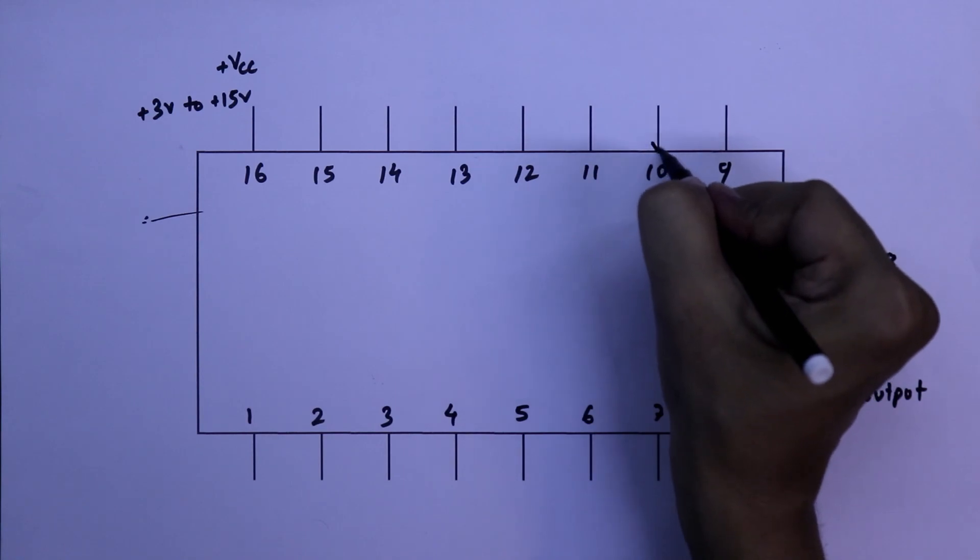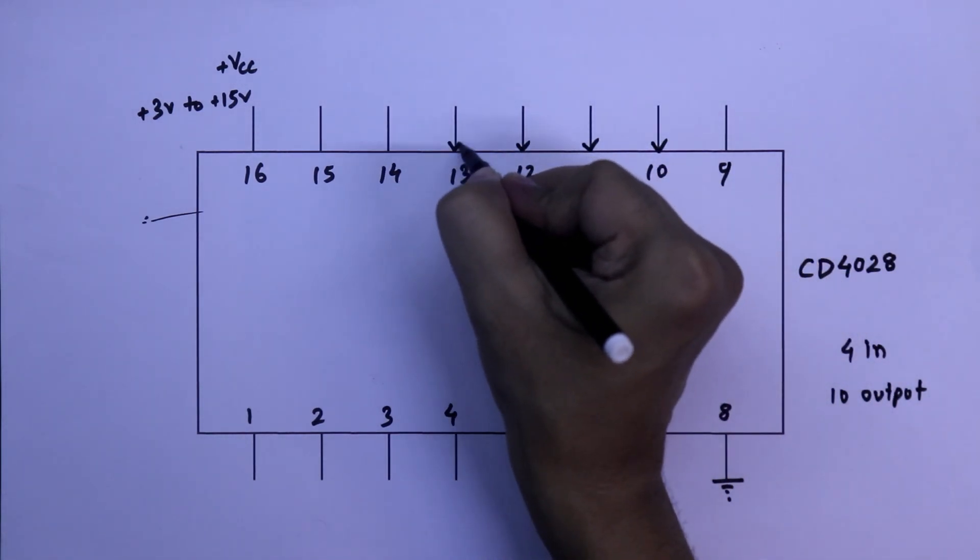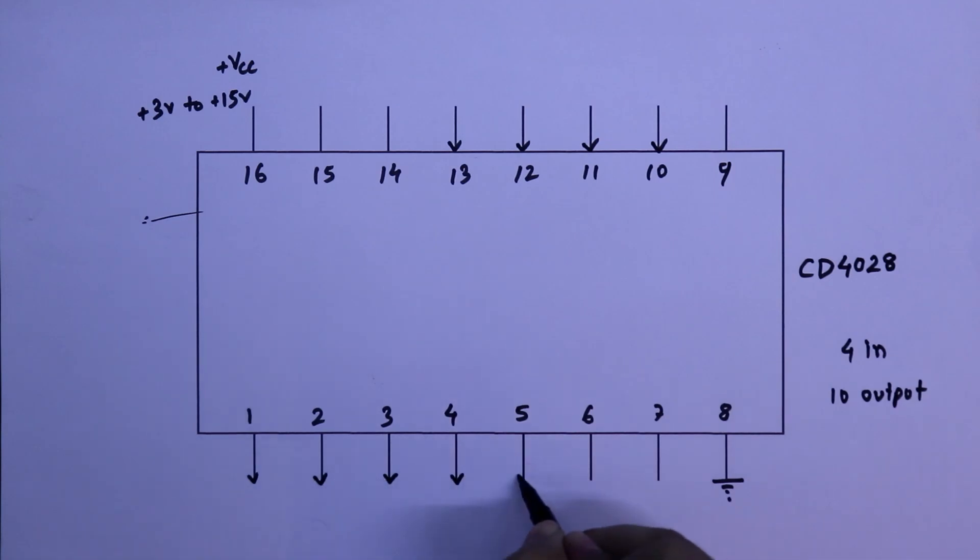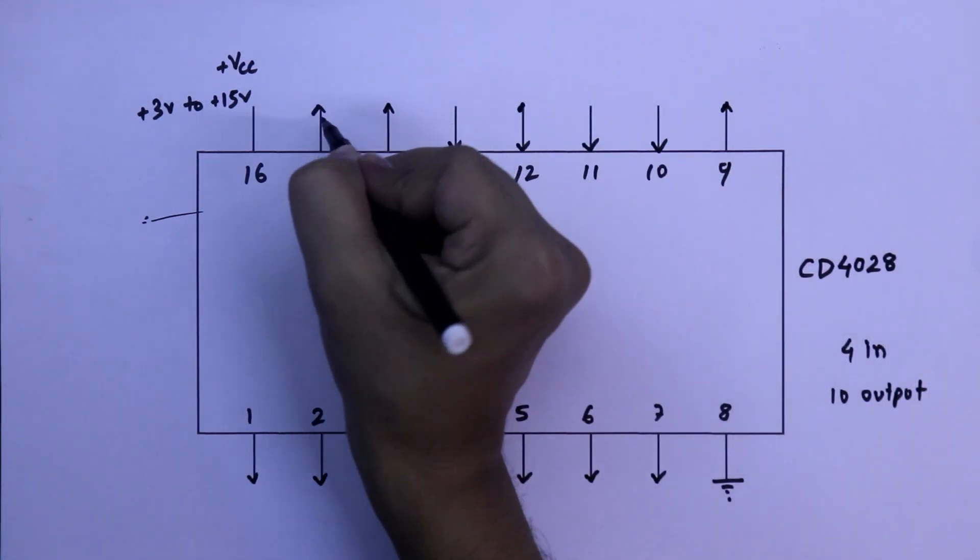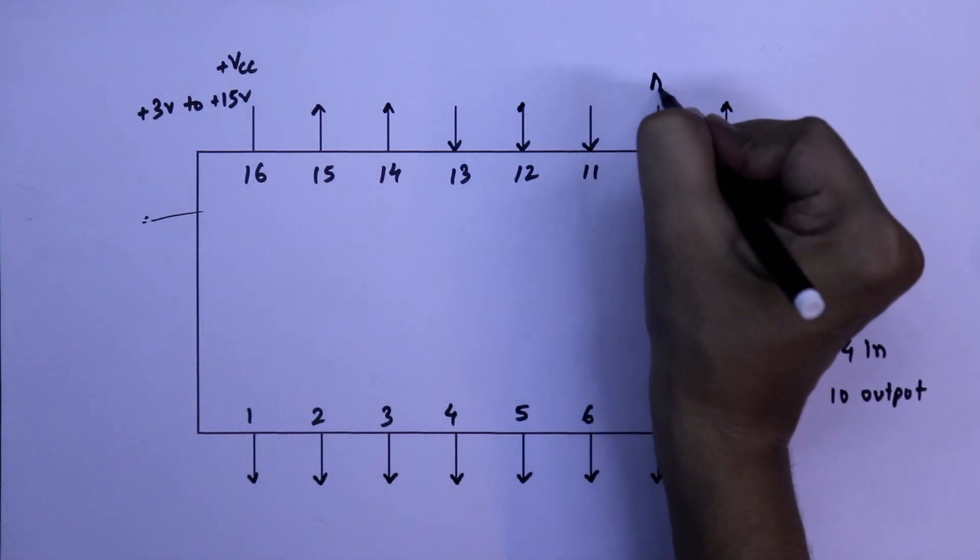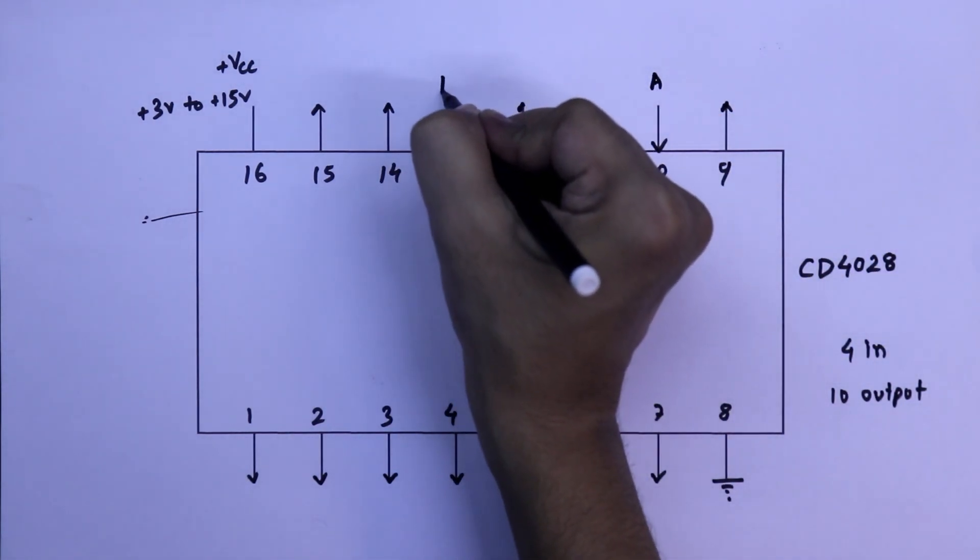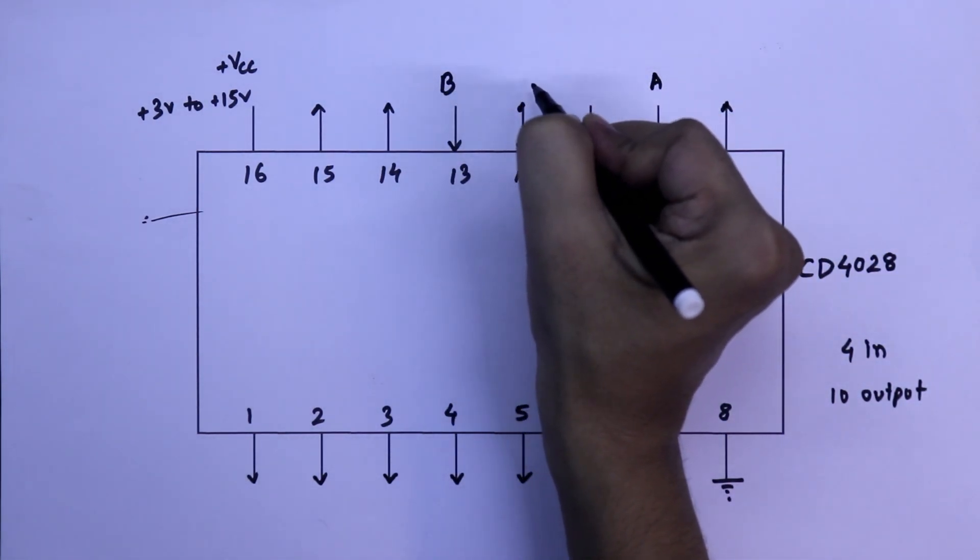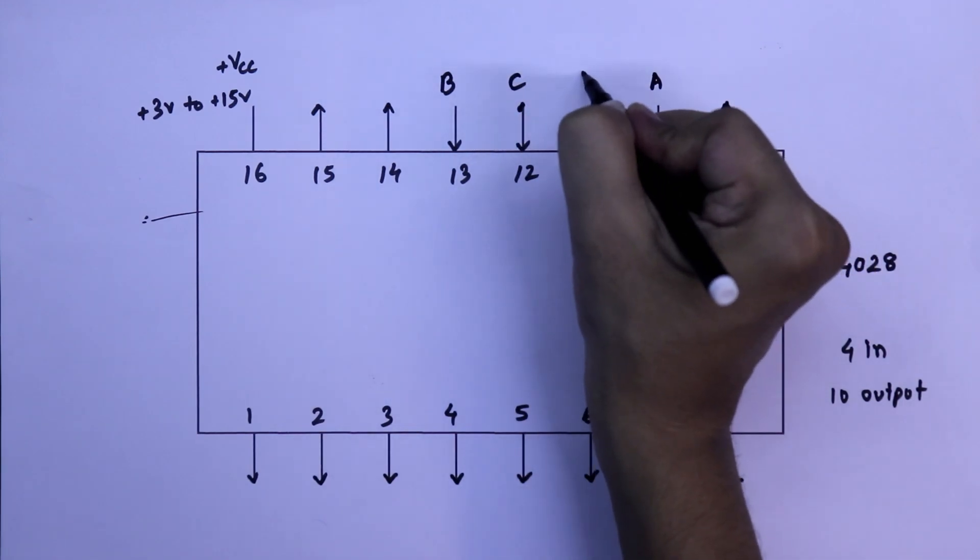Pin 10, 11, 12, 13 are the inputs. Pin number 10 is A, 13 is B, 12 is C, and pin 11 is D.